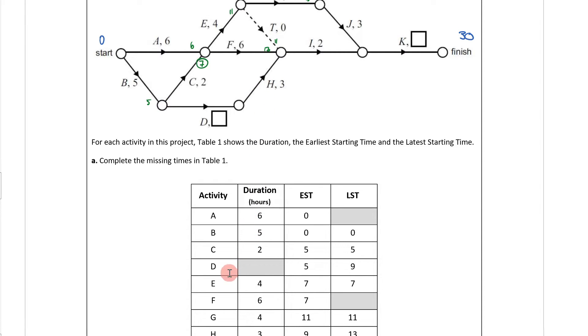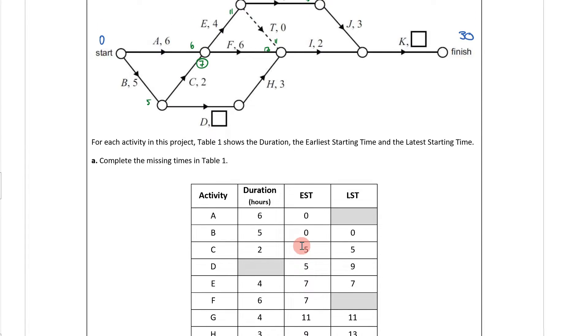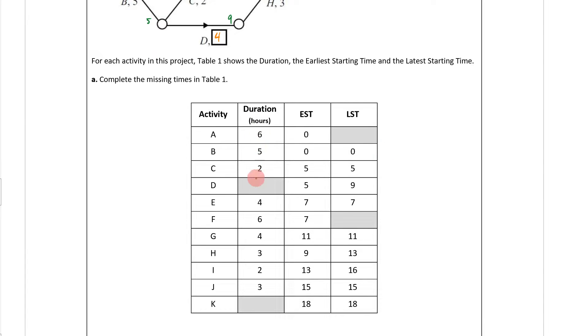But what I do know is that the earliest start time for D is 5. But what's the early start time of H? The early start time is 9. So that means that the earliest start time for this is going to be 9. So in other words, 5 plus what is 9? This has to be, I'll do it in orange, 4. So it's going to be, if I come down here, duration 4.